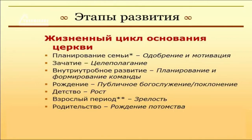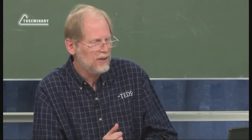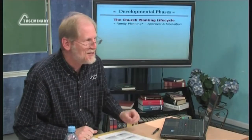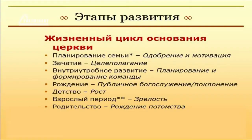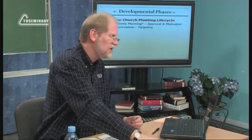Поэтому Логан начинает с этапа планирования семьи: хотим ли мы ребенка? Здесь обсуждаются вопросы мотивации, настроена ли материнская церковь на рождение малыша, а также поддержки и одобрения со стороны деноминации. Следующий этап его модели называется зачатием — образование зародыша. Решение принято: мы будем основывать церковь в определенном районе, поселке, городе. План есть, план утвержден.